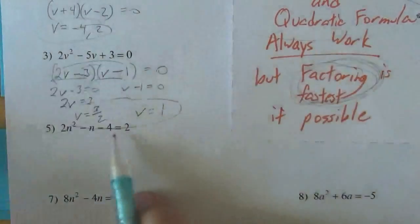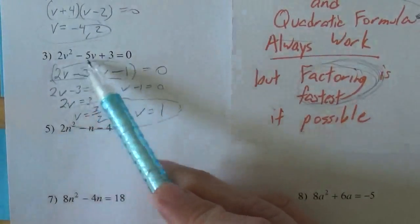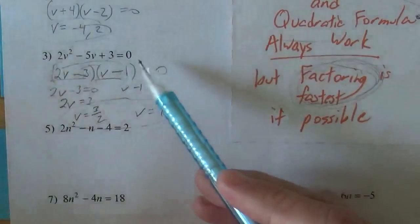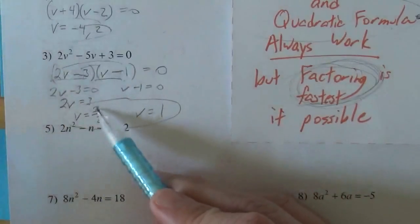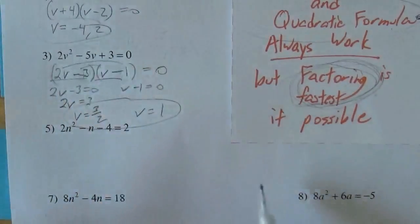So either one of those, it's so impressive. We found a number such that if you square it and multiply it by 2 and subtract 5 times that number and add 3, you get 0. It's pretty impressive. So you could put this back into there, either one of those, and they will make that equation true.